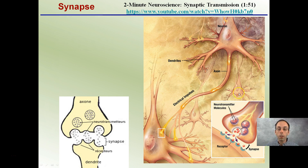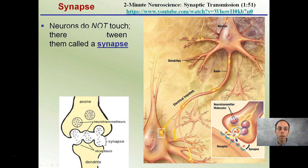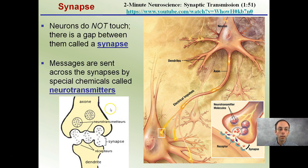The passing on that occurs between neurons happens at the synapse. It's important to remember that neurons don't actually touch one another — there's actually a gap between them called the synapse. So while it may look like they're touching in diagrams, they're actually not. These messages traveling down the axons are sent across the synapse through special chemicals called neurotransmitters.